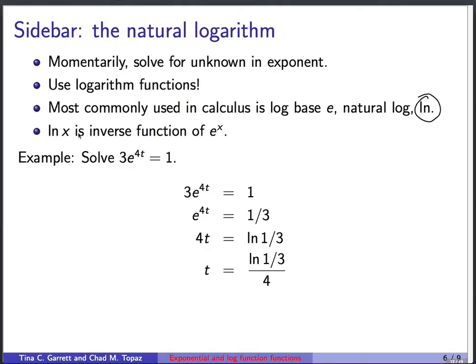The point is that ln(x) is the inverse function of e^x. So what that means is if you had e^x, x is your input, you take e to that. And then if you took the natural log of the answer, you get back out x. ln undoes exponentiation.